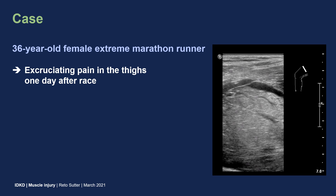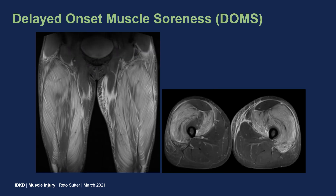Let's return to our case — the mountain marathon runner with excruciating pain. After ultrasound, we performed an MRI during follow-up. MRI shows the true extent of the injury, in this case of delayed onset muscle soreness. We see bilateral muscle hyperintensity on fluid-sensitive images in the quadriceps femoris muscle. Delayed onset muscle soreness, or DOMS, occurs from microstructural muscle injury, followed by an inflammatory process and subsequent shifts of fluid and electrolytes. There is usually no permanent damage to muscle function, and this patient fully recovered after a couple of weeks.